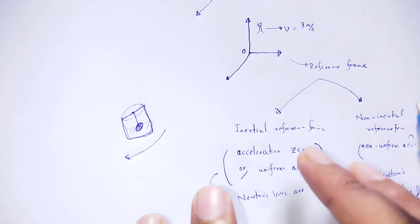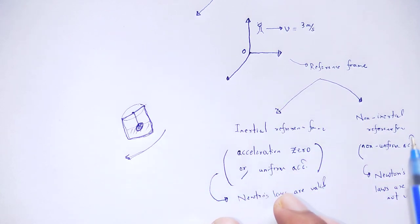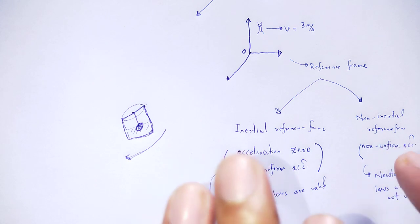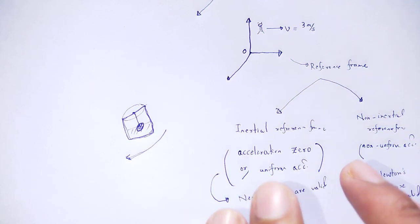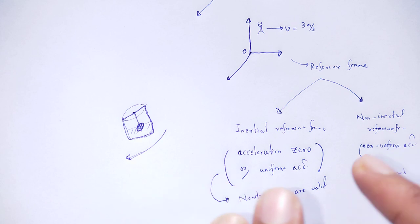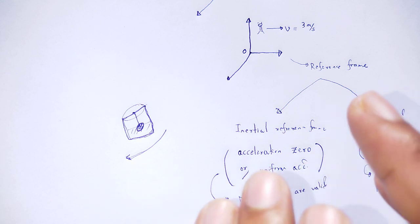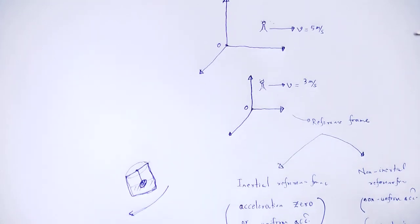So, the reference frame is classified as inertial reference frame — where acceleration is zero and uniform, and Newton's laws are valid — and non-inertial reference frame, where acceleration is non-uniform and Newton's laws are not valid. The term 'reference frame' is therefore relative — it is a relative term.